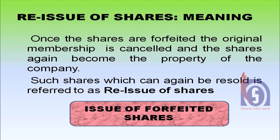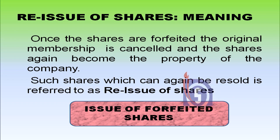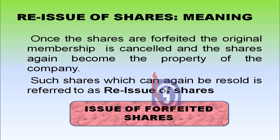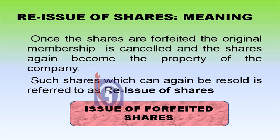Once the shares are forfeited, that means the shareholder has made a default in making one of the installments as called by the company. In that case the original membership of the shareholders gets terminated or cancelled and these shares again become the property of the company. Such shares can again be resold and this is referred to as reissue of shares. So issue of forfeited shares becomes the reissue of shares.